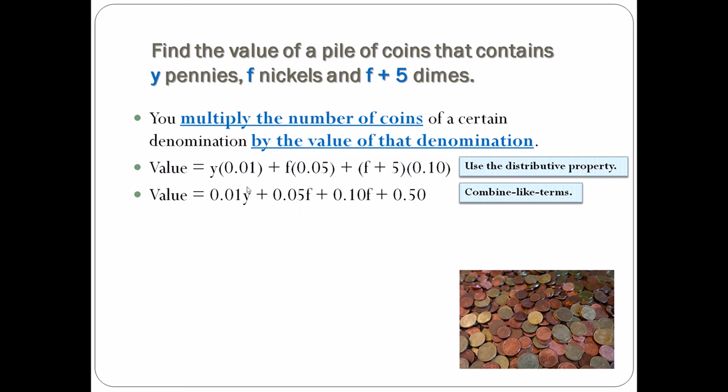Now you got to combine like terms. So let's look for any matches. Are there any other y's? Nope, so the 0.01y stays by itself. Are there any other f's? Well by golly, there's one right next to it. So I have 0.05f plus 0.10f. So I have 5 cents plus 10 cents, which is 15 cents times f. And then there's just this 50 cents here.